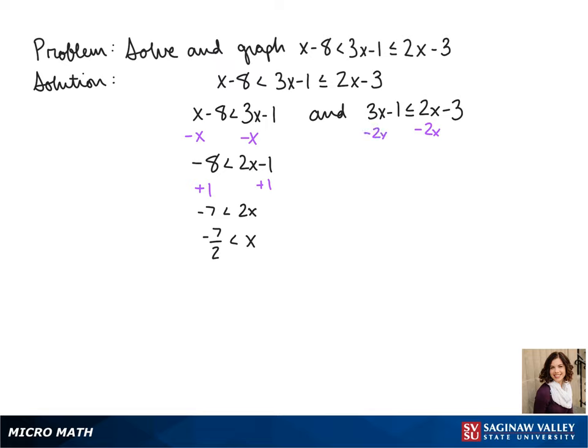On the other side, we subtract 2x from each side to get our variables on the same side, so we get x minus 1 is less than or equal to negative 3. We add 1 to both sides and get x is less than or equal to negative 2.